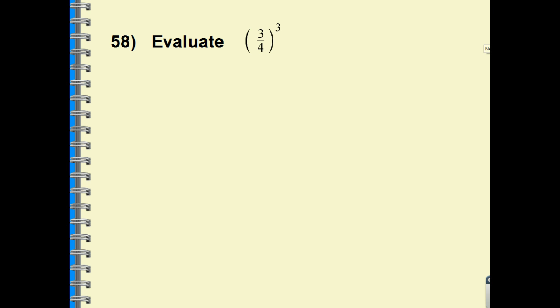Number 58, evaluate means solve. We've talked about fractions with exponents. So everyone inside of the parenthesis is going to get raised to the third power. So we have 3 to the third over 4 to the third. Simplify. We have 27 over 64. And if this is reducible or simplify, you can simplify it. And I think it's already done for us.